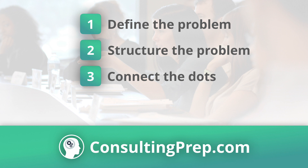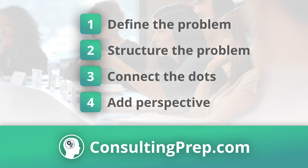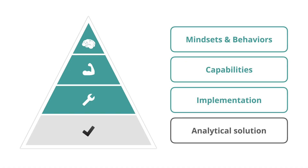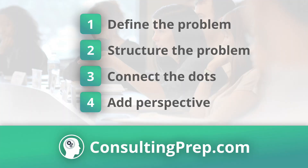The fourth and final secret is to add perspective to your recommendation. It's not only about the analytical solution — you need to think about the implementation of that solution. What will be the risks and the implementation barriers that the client will face? Which capabilities and skills will the client need to execute on the solution? And what is the change in mindsets, behaviors, and culture that is needed? Adding perspective creates more layers in your recommendation.